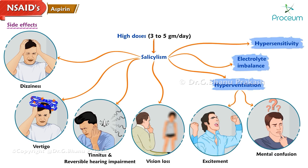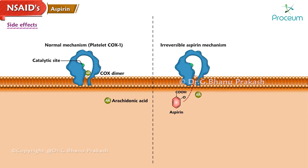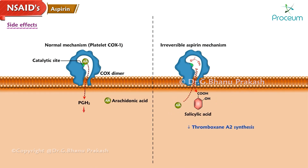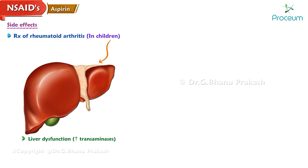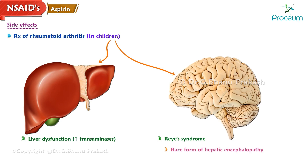It may also be associated with hypersensitivity in some patients. Irreversible acetylation of cyclooxygenase in platelets decreases thromboxane A2 synthesis, resulting in prolongation of bleeding time. When used for treatment of rheumatoid arthritis, especially in children, it may cause liver dysfunction with elevation of liver transaminases.